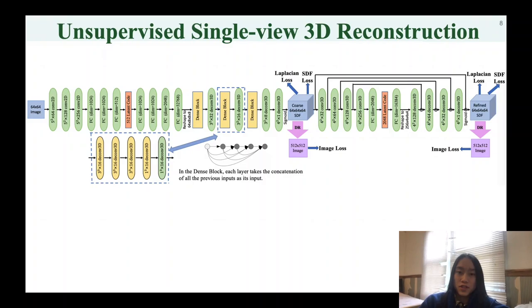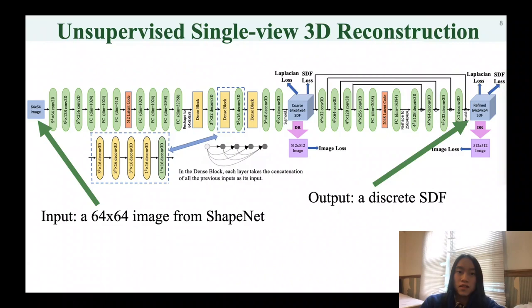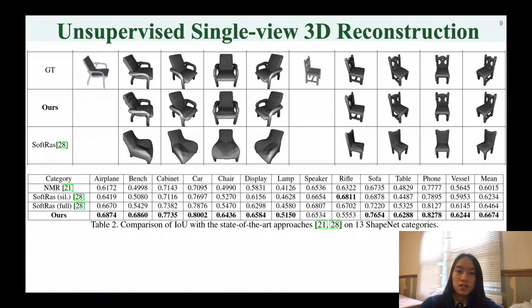We leverage our SDFDIF to train a DIF neural network to perform single-view 3D reconstruction without 3D supervision. The input is an image from the ShapeNet dataset and the output is a discrete SDF. The loss function contains image loss, SDF loss, and geometry loss, as we mentioned before.